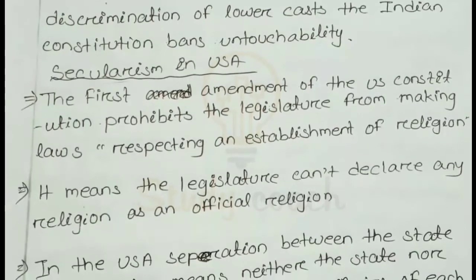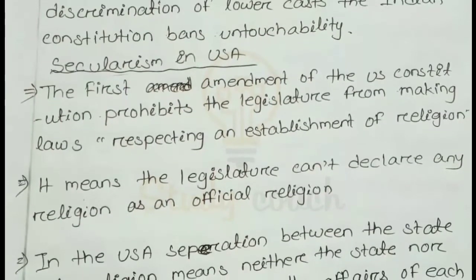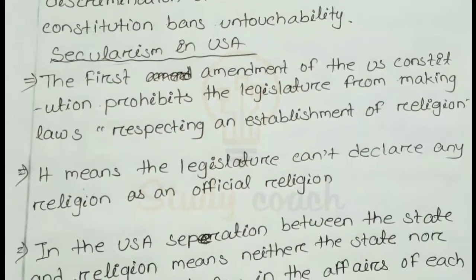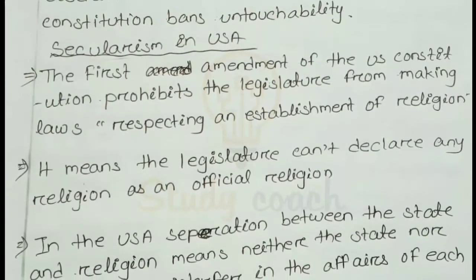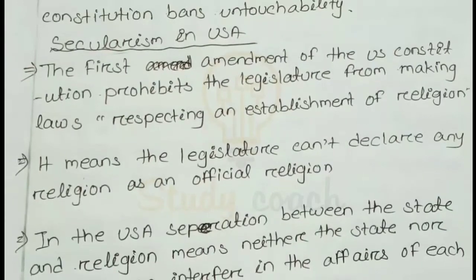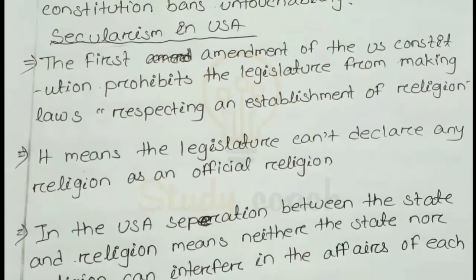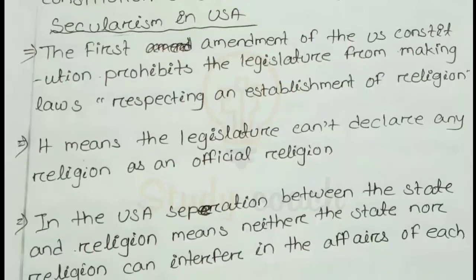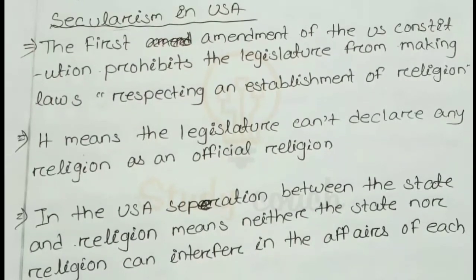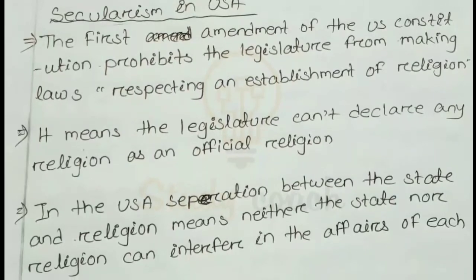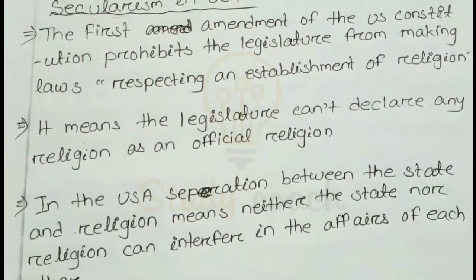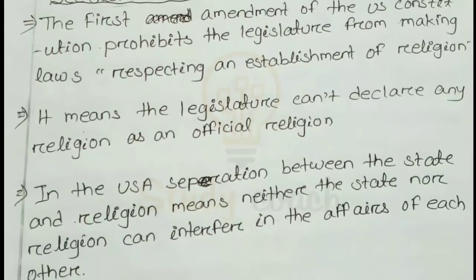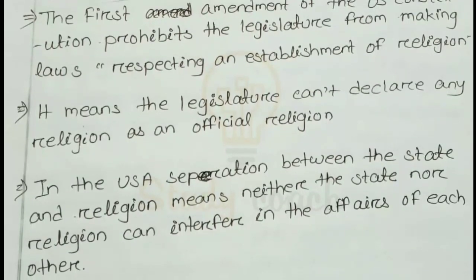Next, secularism in the USA. The First Amendment of the US Constitution prevents the legislature from making laws respecting the establishment of religion. This means the legislature cannot declare any particular religion as an official religion. In the USA, there is a separation between the state and religion, meaning neither the state nor religion can interfere in the affairs of each other.